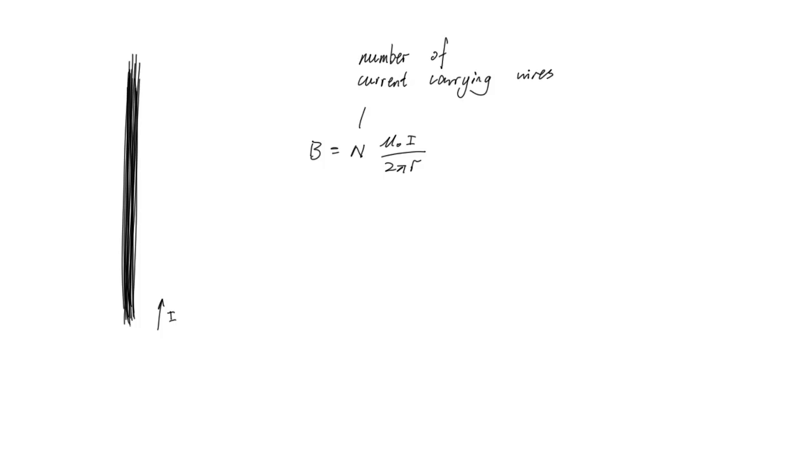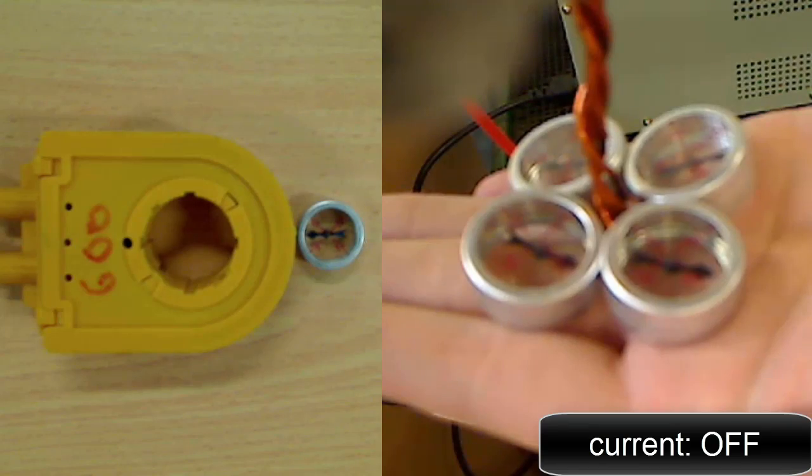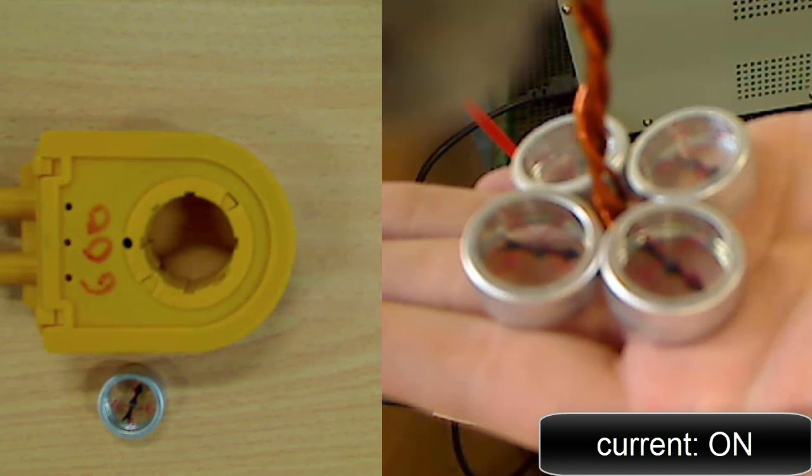Increasing the number of wires is both cheap and portable. Here's an example. This has 600 turns of wire. Compare the magnetic field around this to one wire. Same current, same distance. But the difference is notable.